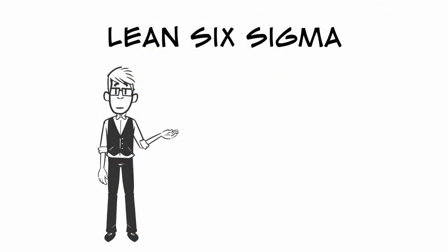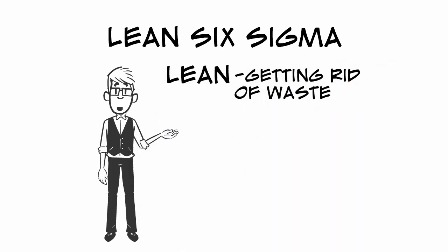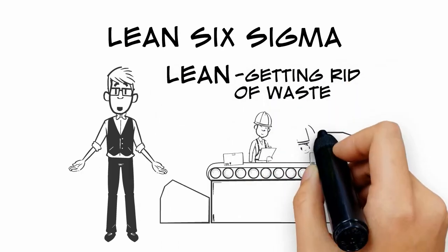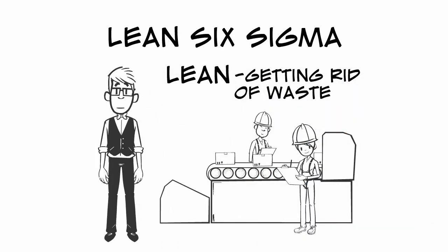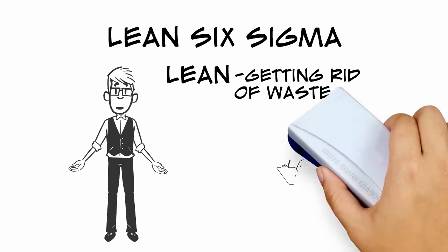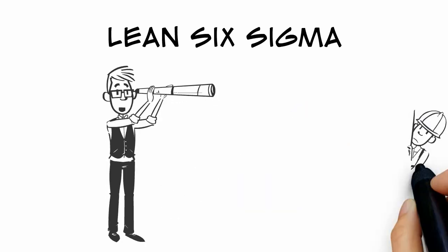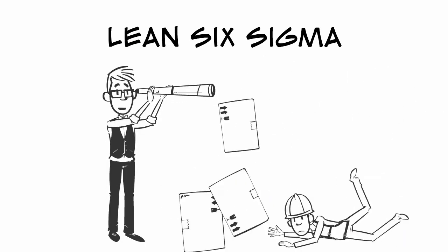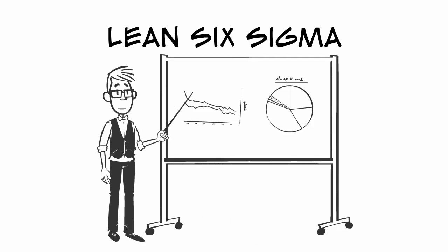Lean Six Sigma is actually a combination of operational controls. The first is Lean Manufacturing, or simply Lean, which is all about eliminating waste. Six Sigma is all about figuring out what is causing defects and then figuring out how to minimize them. The Six Sigma method utilizes statistical methods to help measure, analyze, and control processes.